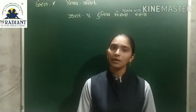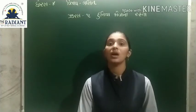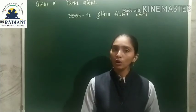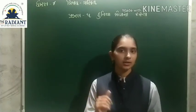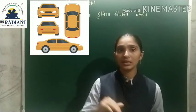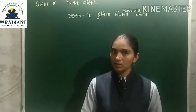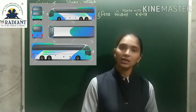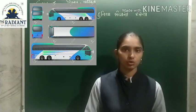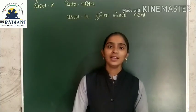તો મિત્રો, સમજ્યાને? કોઈ પણ વસ્તુ ઉપરથી, સામેથી, બાજુ, પાછળથી જોઈએ, એ એક જ વસ્તુ છે પણ આકારમાં આપણને તફાવત જોવા મળે. ગાડીને ઉપરથી, સામેથી, બાજુએથી, અને પાછળથી જોઈએ તો અલગ અલગ દેખાય.